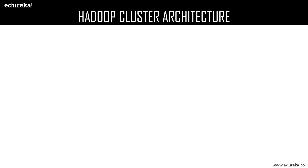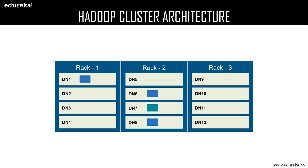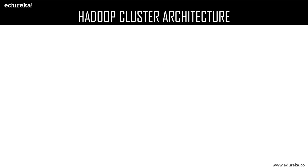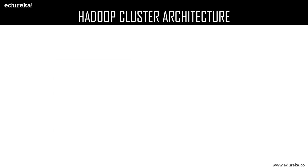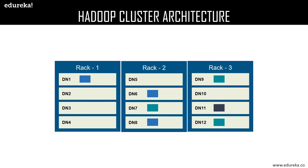Now let us look at a different block. There is a new block in rack number two, data node seven. Rack two is the local rack for the data block stored in data node seven. The replicas of data node seven are stored in the remote rack — rack number three — specifically in data node nine and data node 12. Additionally, a new data block is stored in data node 11, with rack three as the local rack. The replicas of data node 11 are stored in the remote rack, rack number one, in data node 2 and data node 4.